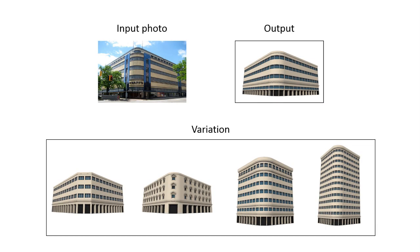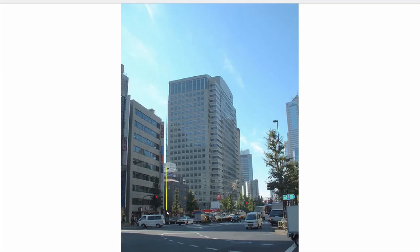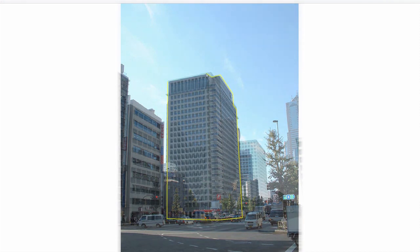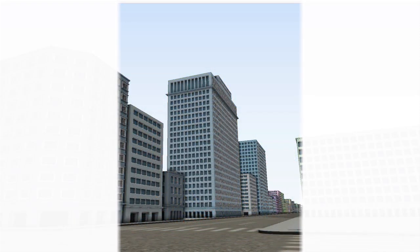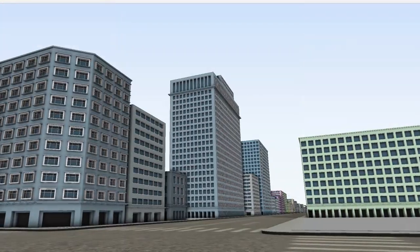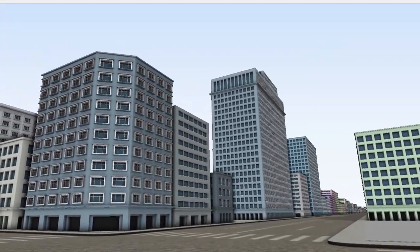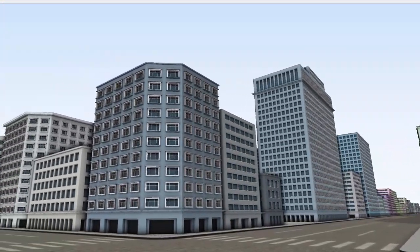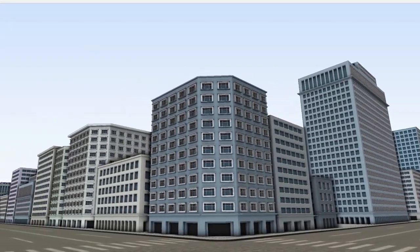Since the output of our approach is grammar, we can generate many variations of 3D buildings from a single output grammar by changing parameter values and grammar selections. The user draws a silhouette of the target building, and the 3D building grammar is generated by our system. Then many buildings are procedurally generated using the same output grammar, but with slightly different parameter values and grammar selections.